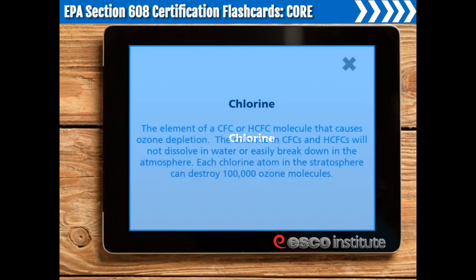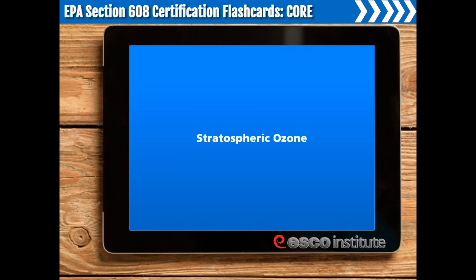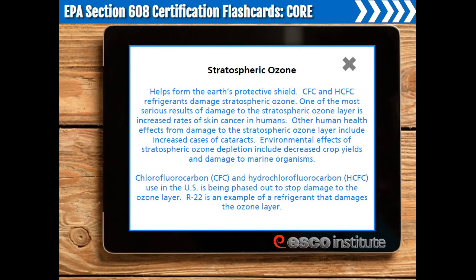Chlorine. The element of a CFC or HCFC molecule that causes ozone depletion. The chlorine in CFCs and HCFCs will not dissolve in water or easily break down in the atmosphere. Each chlorine atom in the stratosphere can destroy 100,000 ozone molecules. Stratospheric ozone. Stratospheric ozone helps form the Earth's protective shield. CFC and HCFC refrigerants damage stratospheric ozone. One of the most serious results of damage to the stratospheric ozone layer is increased rates of skin cancer in humans.